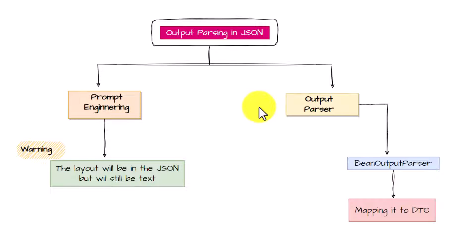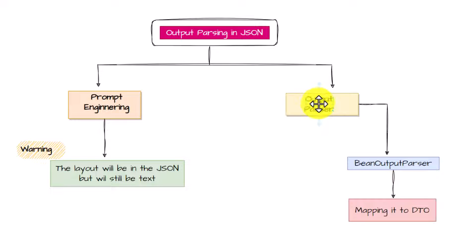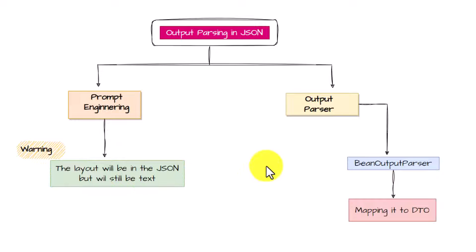In this video we will try to produce output in JSON format using Spring AI. There are particularly two ways to produce output in JSON format: one is prompt engineering and one is using the output parser. The problem with prompt engineering is that even though the final output is going to be in the JSON format, it's not going to be true JSON — it's still going to be text format.